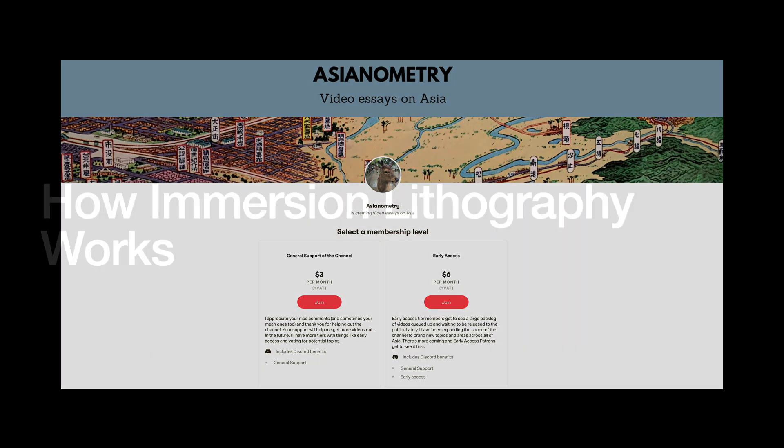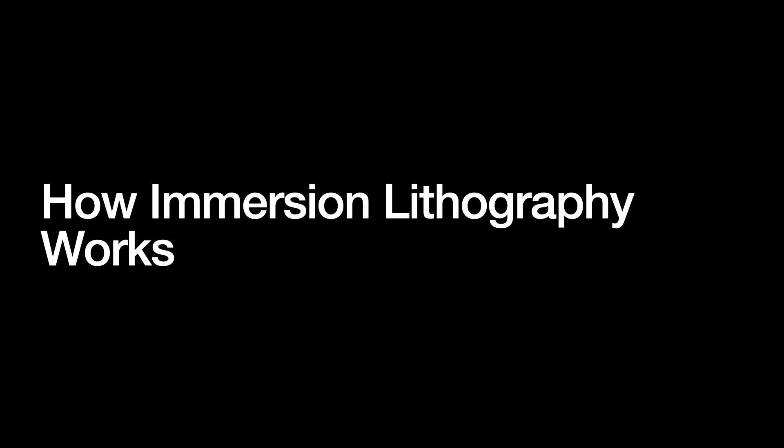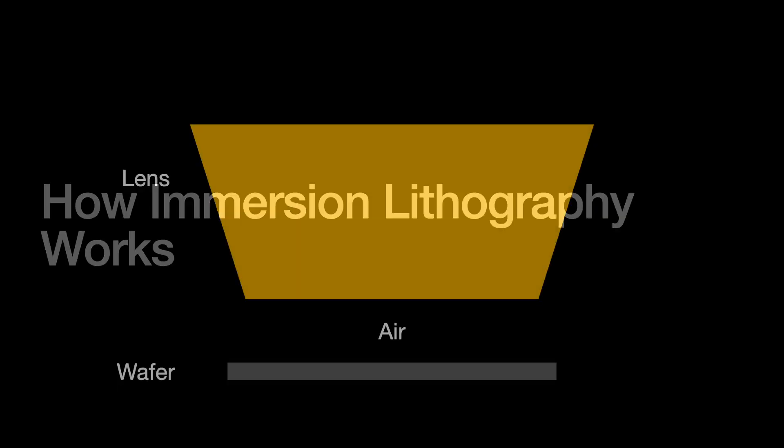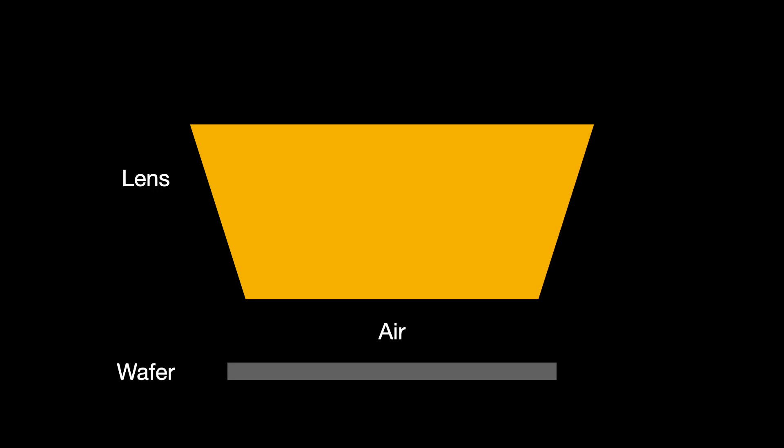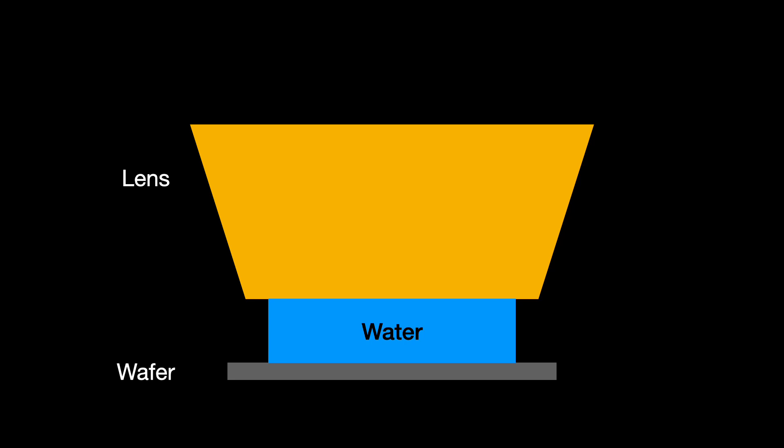Let us first start with how this whole immersion lithography thing actually works. Previous lithography techniques had an air gap between the wafer and the machine. Immersion lithography replaces that air gap with water. So now you're shooting ultraviolet light through water at the wafer. You have to literally stick the lens into water. Why does this work?